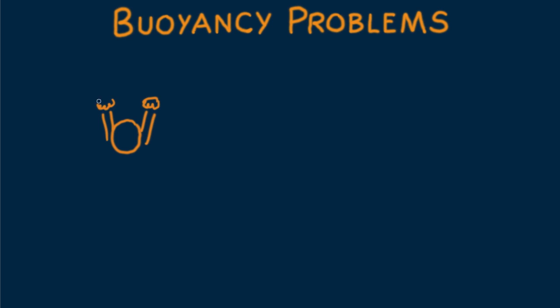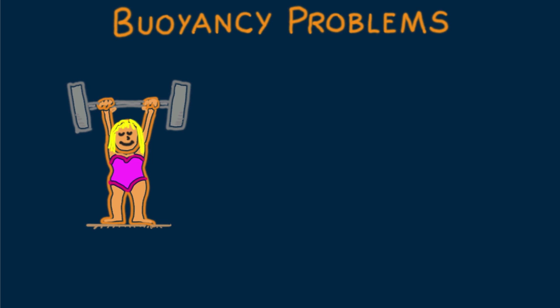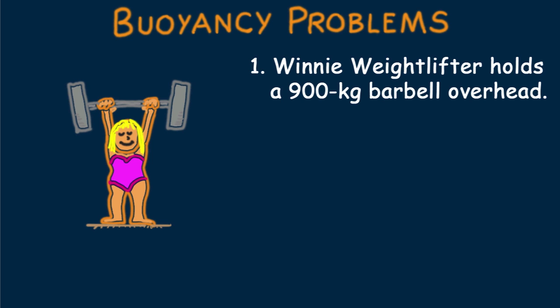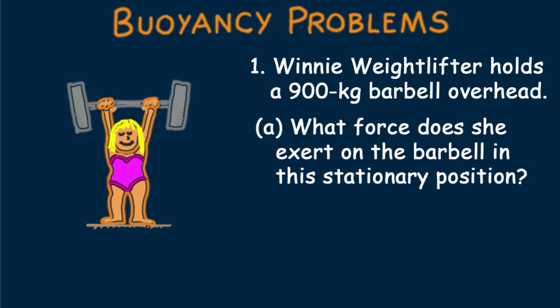Let's take a look at a couple of problems that involve what we've just learned. Consider this one of Winnie Weightlifter. Number 1. Winnie Weightlifter holds a 900 kilogram barbell overhead. A. What force does she exert on the barbell in this stationary position?